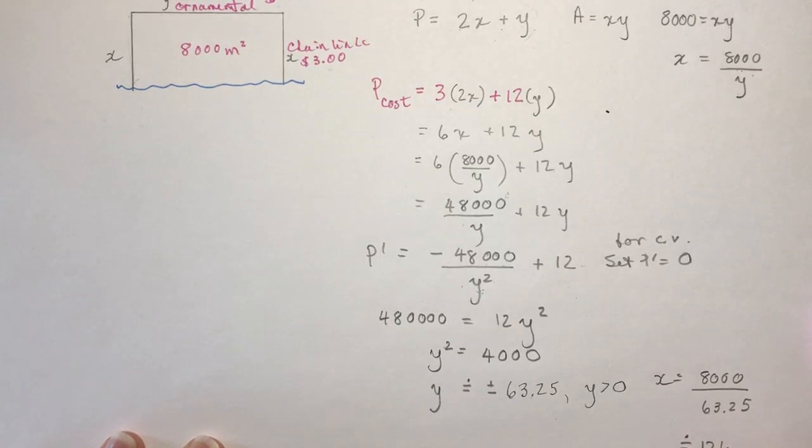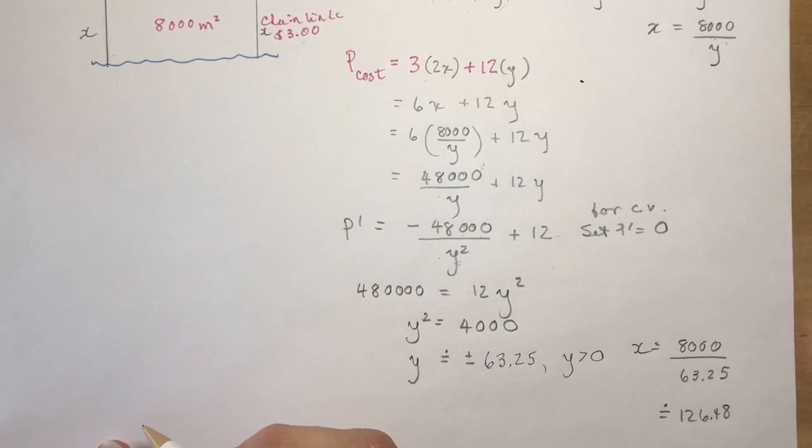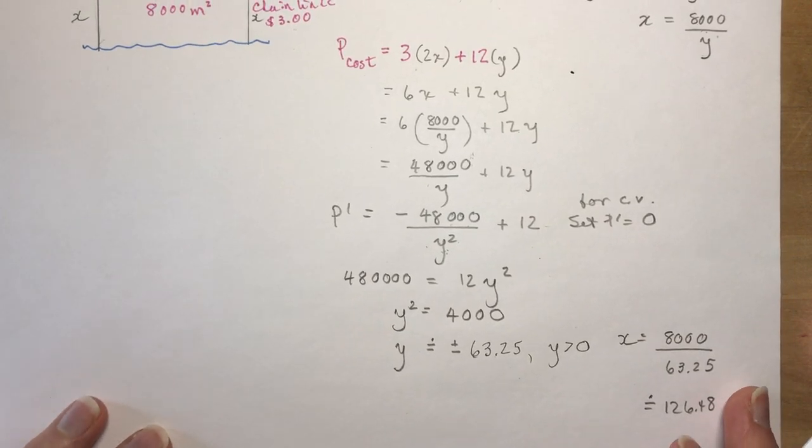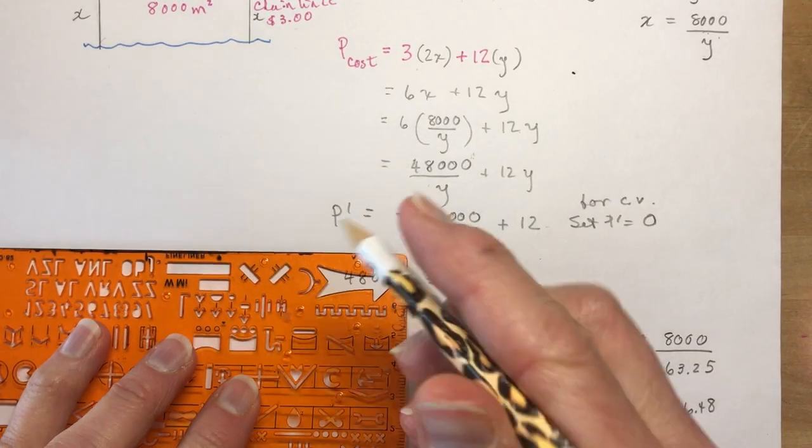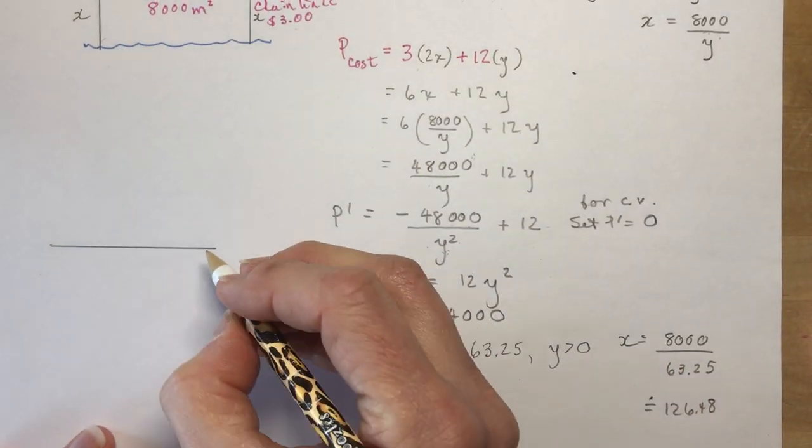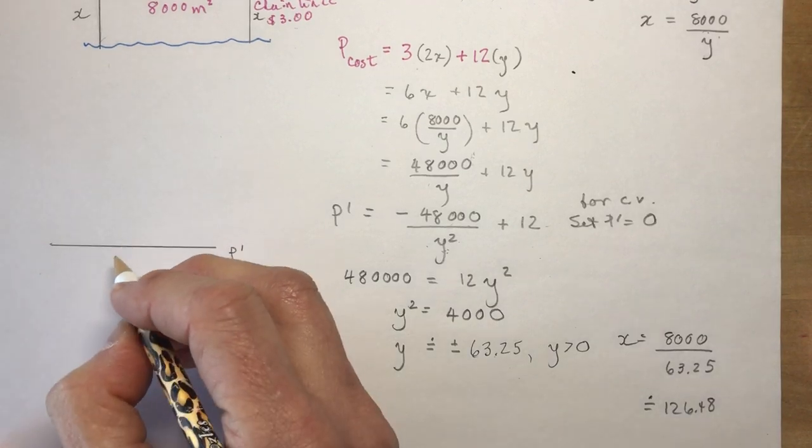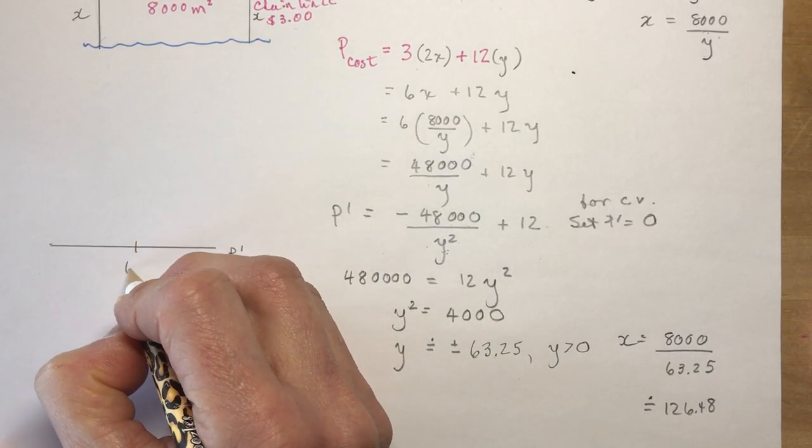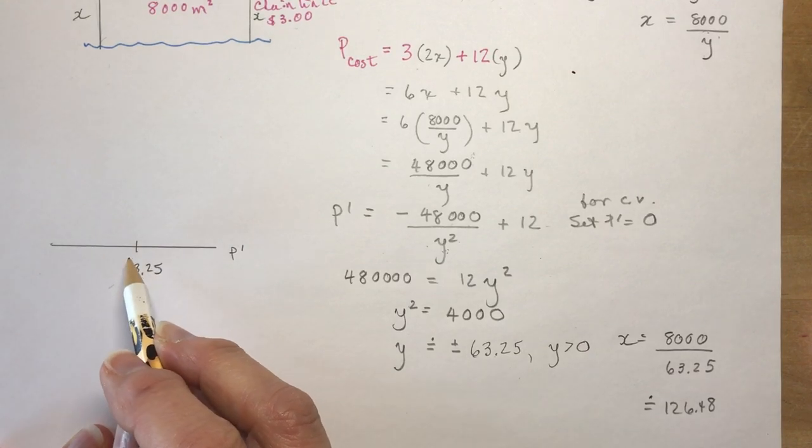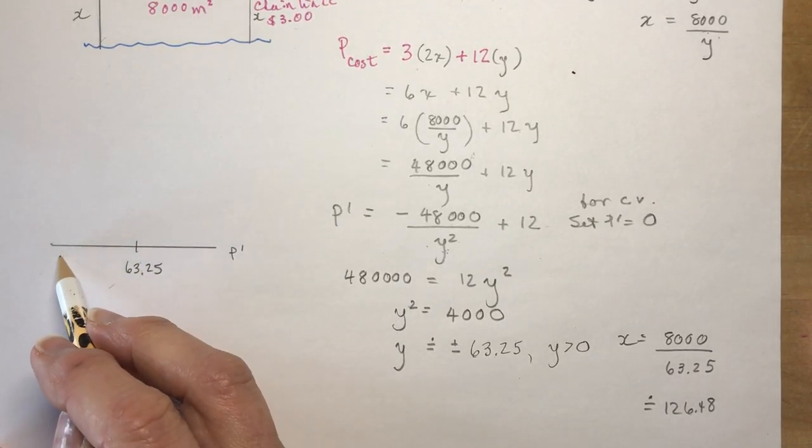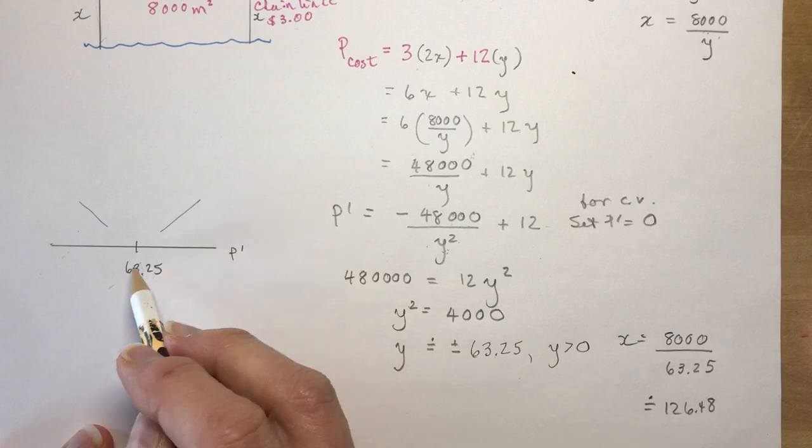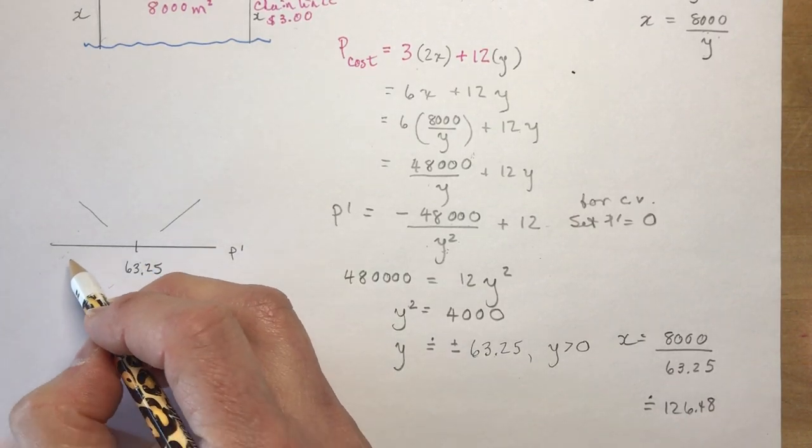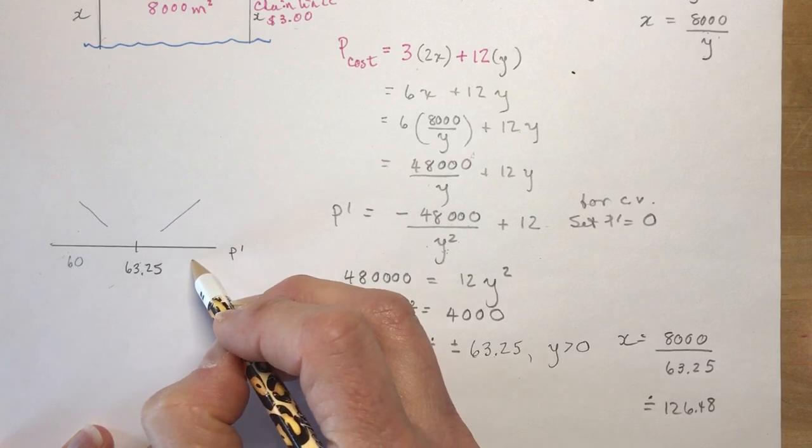Those are your x and y dimensions. Now if your teacher has taught this after teaching you how to figure out if something is a max or minimum, you may also need to do a proof that you've found a minimum value. I'll put that in here just in case. So I would say P' and I've chosen 63.25, and I want to know if this is a minimum value. If it's a minimum then on this side the slope would have to be negative and on this side it would have to be positive, so that means this must be negative and this positive for this to be a minimum.